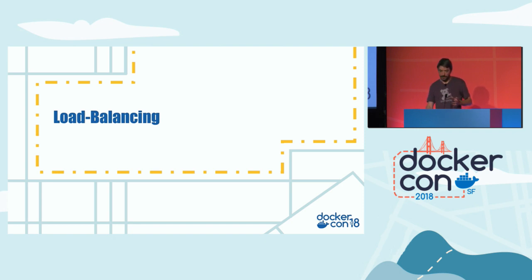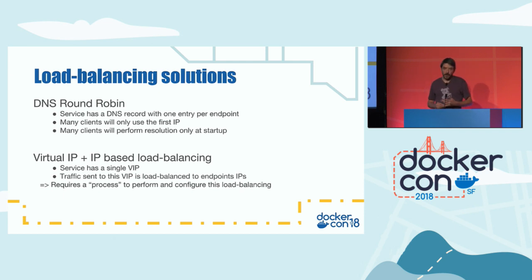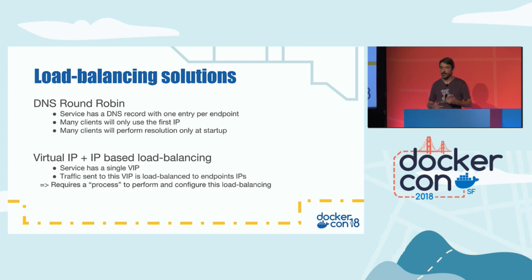There are many ways to do load balancing. In the past, we used DNS: you register all backend IP addresses with a DNS name and when a client connects it gets all IPs. This has drawbacks — most clients only use the first IP address. DNS round-robin helps by shuffling the IP set, but most clients only perform DNS resolution at startup and never do it again, which is a big problem if backends come and go.